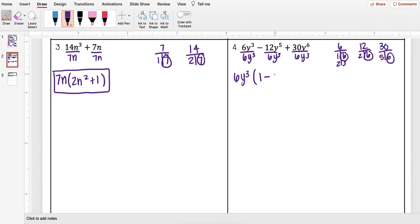Minus 12 divided by 6 is 2. y to the 5th divided by y cubed is y squared. 30 divided by 6 I get 5. And then y cubed.